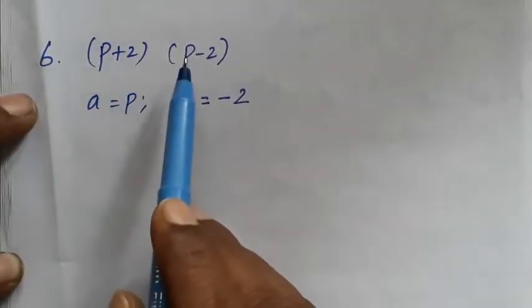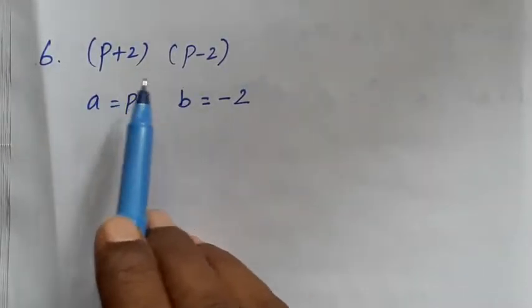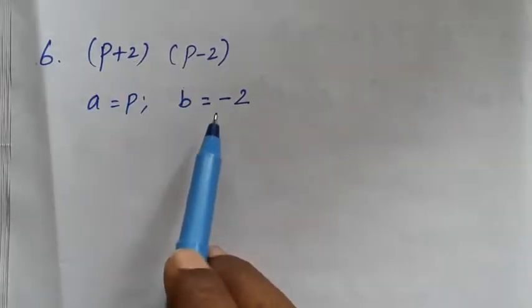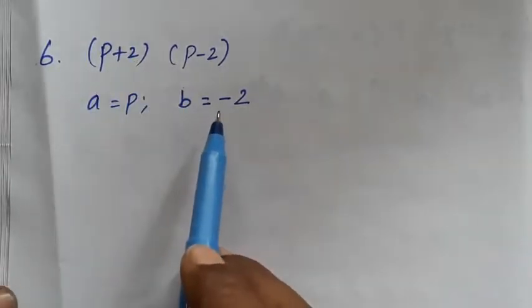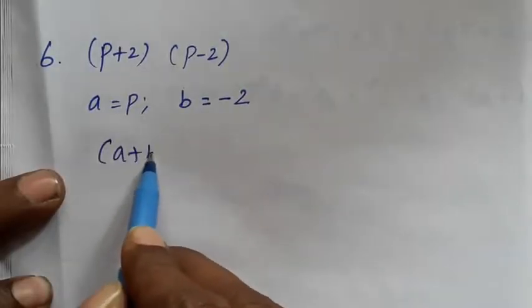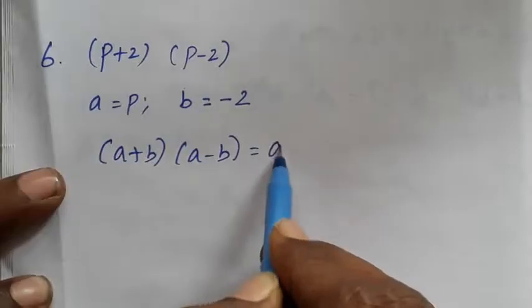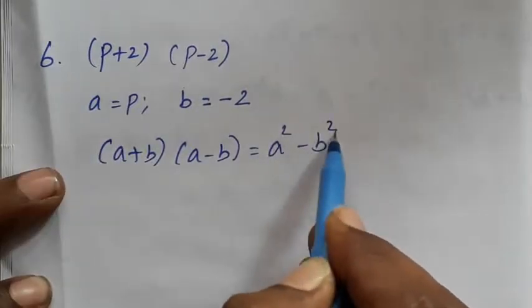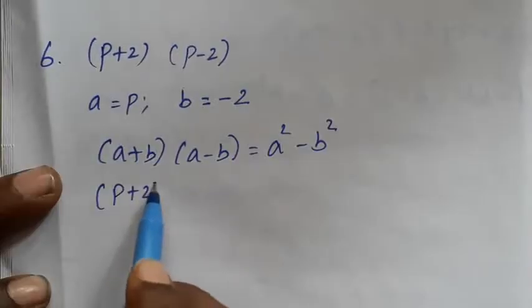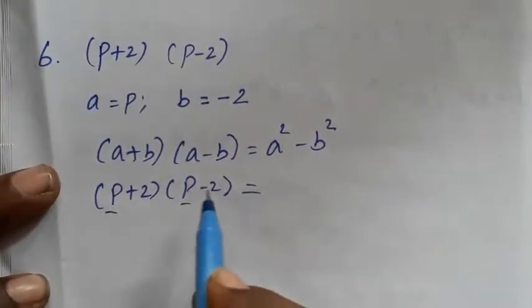Let's apply this formula. We have P plus 2 and P minus 2. Using A plus B, A minus B equals A squared minus B squared, we substitute P plus 2 and P minus 2 into the formula.